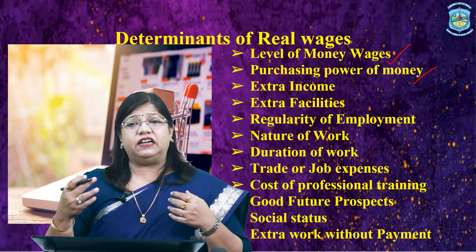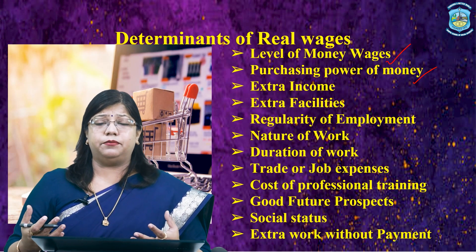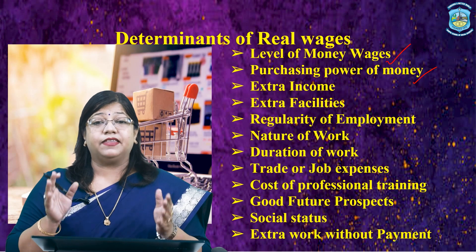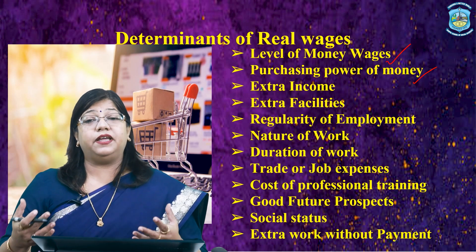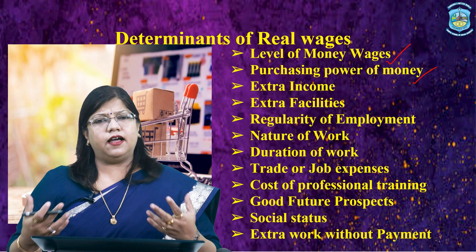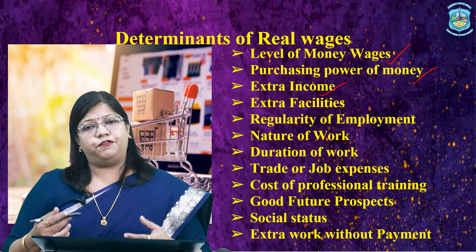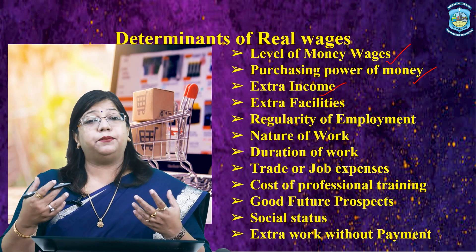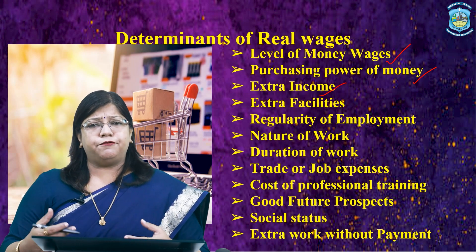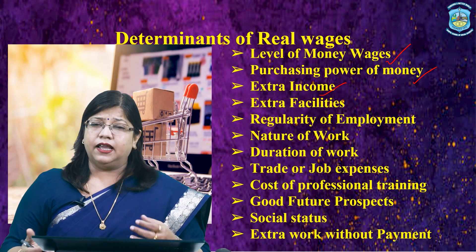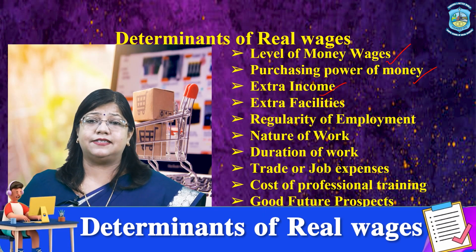Real wages are directly influenced by the purchasing power of money or price level. The purchasing power of an individual is different in different locations and different time periods. In small towns, purchasing power of money is high and, as a result, real wages are also high. The real wages of a worker are also influenced by the possibility of supplementary income. For example, tips for waiters increase their real income. In the same manner, extra facilities provided to a labourer also influence their real wages.